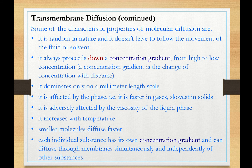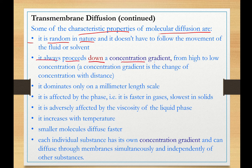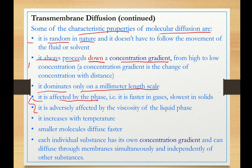What are the characteristics of diffusion? First, it is random in nature and doesn't have to follow the movement of the solvent. We said it proceeds without bulk flow. It always proceeds down a concentration gradient from high to low. It dominates only on a millimeter length scale, so only at a short distance. It is affected by phase. The diffusion coefficient is higher in gases and slowest in solids. It increases with temperature because kinetic energy is higher.